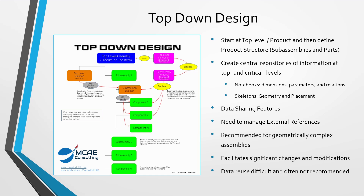Top-down design is typically used when you have very complex assemblies — a large number of components, complex geometry typically with housings, and complex relationships where changes to one component should propagate to others. The idea is that you put more work upfront creating notebooks and skeletons, but later when implementing changes it's much easier: rather than opening individual parts one by one, you change the notebooks and skeletons, and when you regenerate, those changes propagate throughout your model.